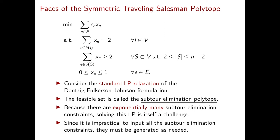In general, the traveling salesman polytope is strictly contained in the subtour elimination polytope. Solving this linear programming problem is itself a challenge because we have exponentially many subtour elimination constraints. Since there are exponentially many, for reasonably sized problems you will never be able to write them all down explicitly — in fact you would be better off simply enumerating all the binary vectors and solving the original integer programming problem by enumeration.